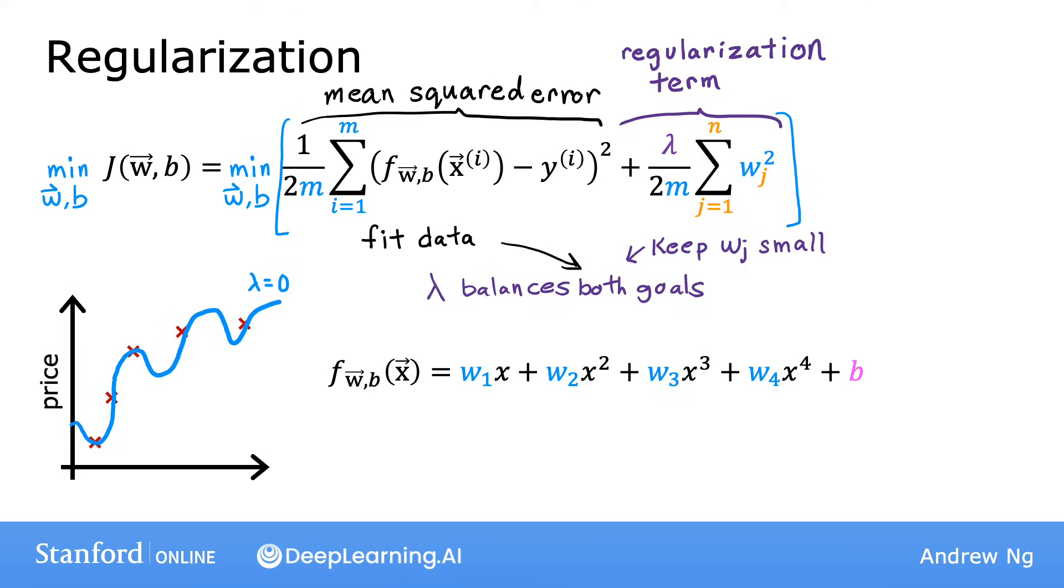Let's now look at the other extreme. If you set lambda to be a really, really, really large number, say lambda equals 10 to the power of 10. Then you're placing a very heavy weight on this regularization term on the right. And the only way to minimize this is to be sure that all the values of w are pretty much very close to zero. So if lambda is very, very large, the learning algorithm will choose w1, w2, w3, and w4 to be extremely close to zero. And thus, f of x is basically equal to b. And so the learning algorithm fits a horizontal straight line and underfits.